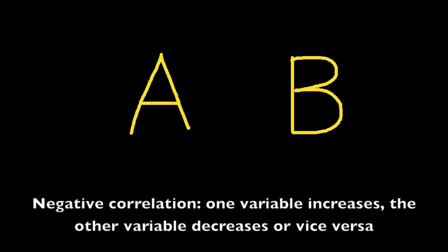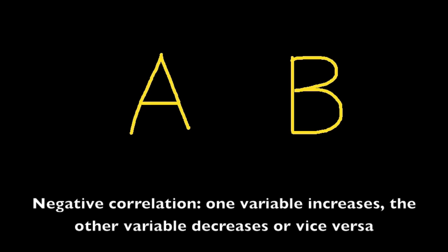The converse to this is known as a negative correlation, and that is when one variable increases — say A increases — then the other decreases. Of course, it would also be a negative correlation if A were to decrease and B were to increase.